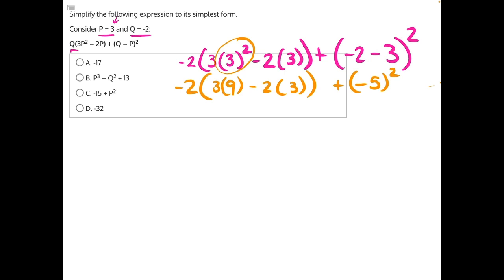Then we would do multiplication next. So we have 3 times 9, which would be 27, and 2 times 3, which would be 6, minus 2 plus negative 5 squared.